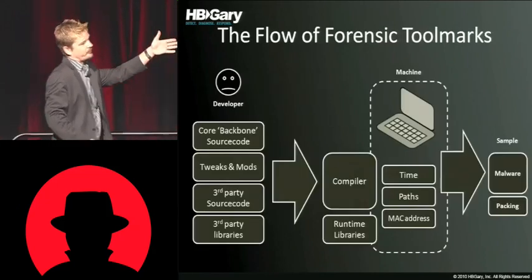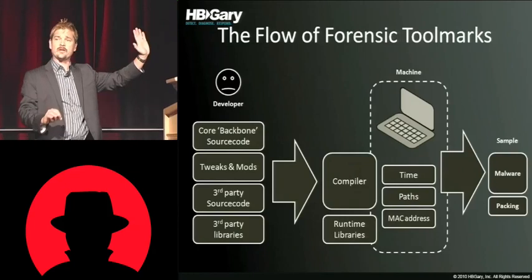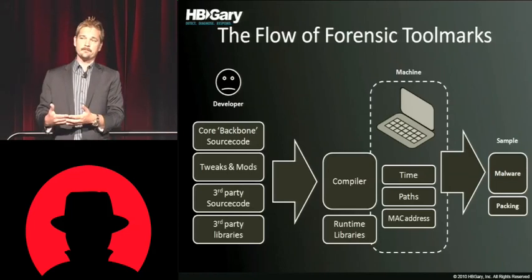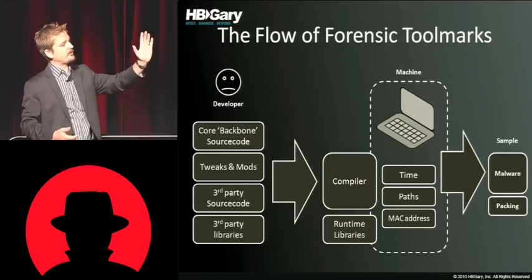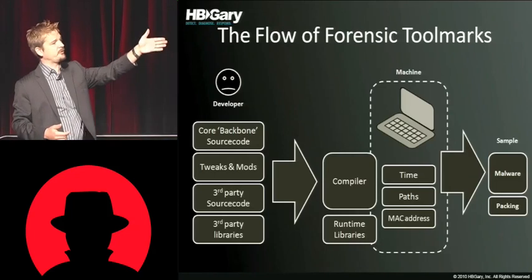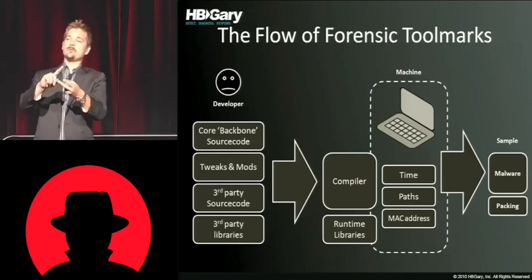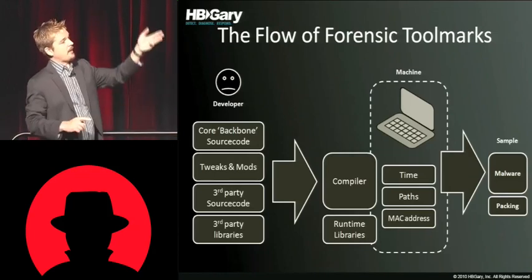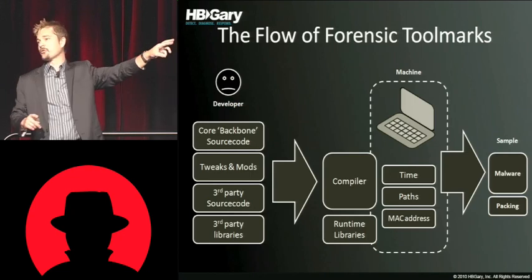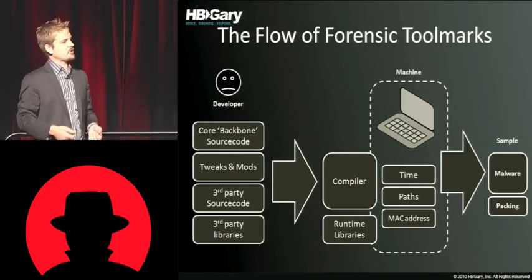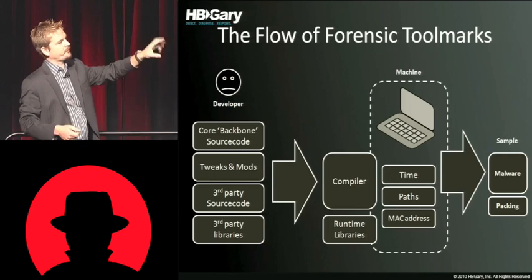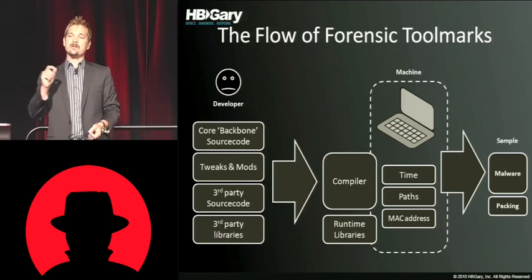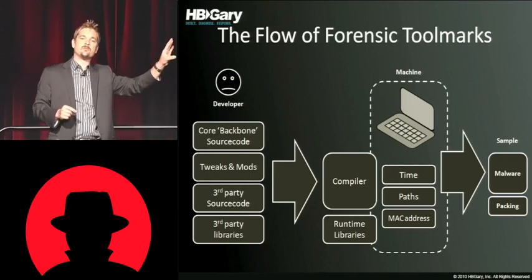This section focuses on developer tool marks. On the left-hand side we have all the different things that go into the source code itself, then a compilation step including linking, runtime libraries, and machine-level data such as time, local drive paths, and even a MAC address — I have an interesting example of that. Then the malware pops out the other side, possibly with one more step: the packing step, which does post-obfuscation on that binary. At every single step of this flow, there is the potential that one or more forensic tool marks will be left behind in the binary. That's where we're going to focus.